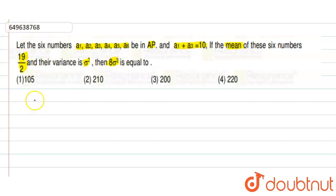So here we can see A1, A2, A3, A4, A5, A6 in AP. And A1 plus A3 is 10. And the mean of these 6 numbers is given.